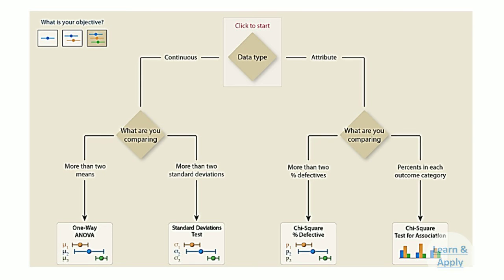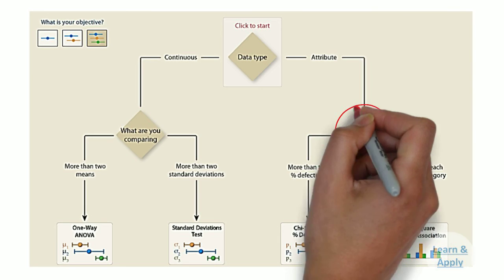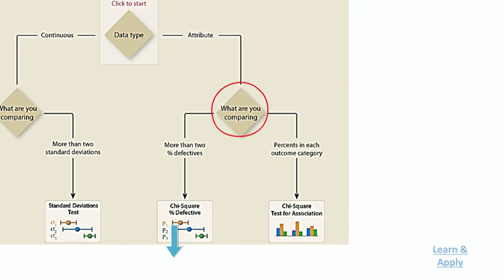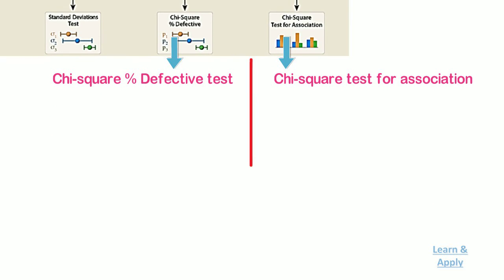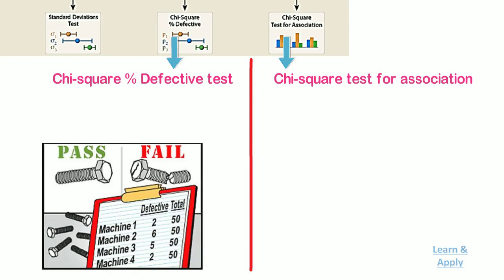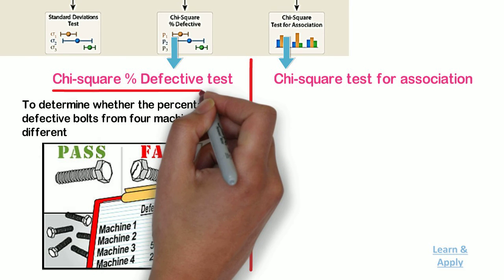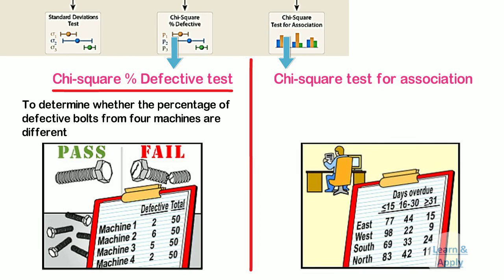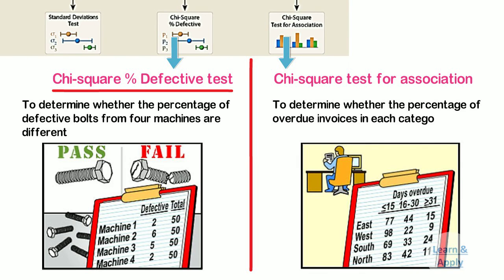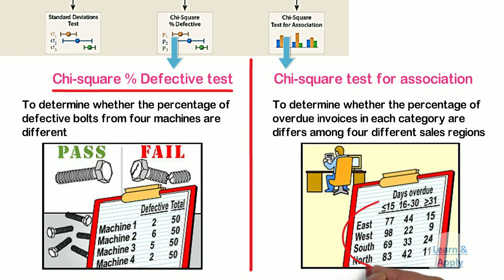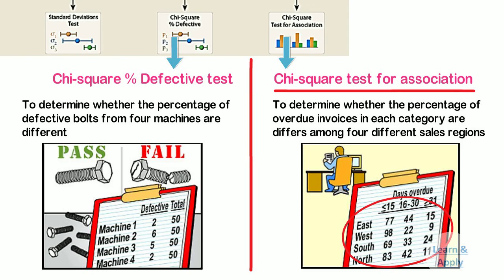If the data is attribute, the second selection criteria is: what are you comparing? If you are comparing percentage defectives in more than two samples, use the chi-square percentage defective test. If you want to compare percentage in each outcome category across more than two samples, use the chi-square test for association. For example, an engineer examines a sample of bolts from four machines for cracks that make the bolts unusable; if he wants to determine whether the percentage defective differs for each machine, then he uses the chi-square percentage defective test. Whereas if an analyst wants to determine whether the percentage of overdue invoices in each category — 15 days or less, 16 to 30 days, and more than 30 days — differs among four different sales regions, then he uses the chi-square test for association.